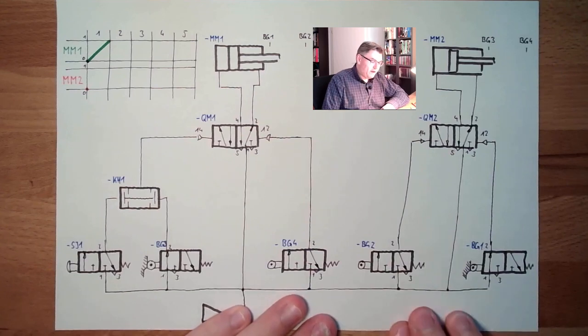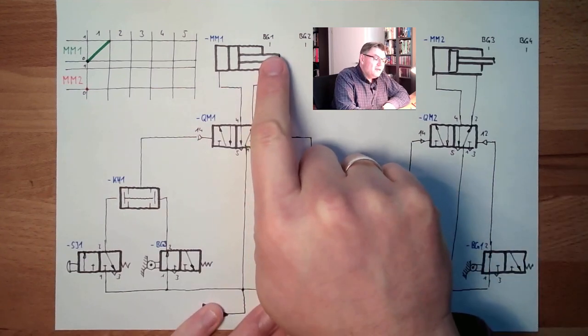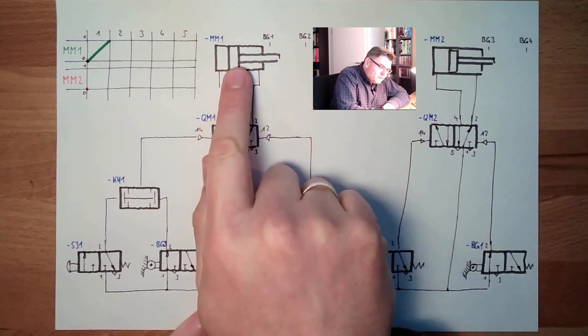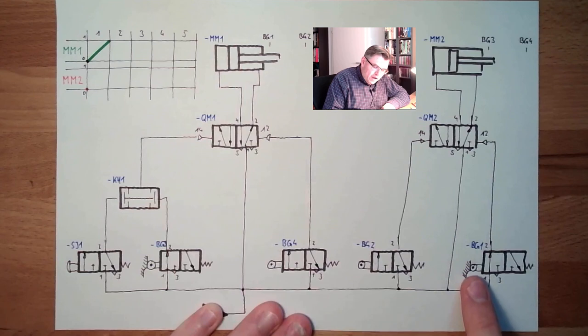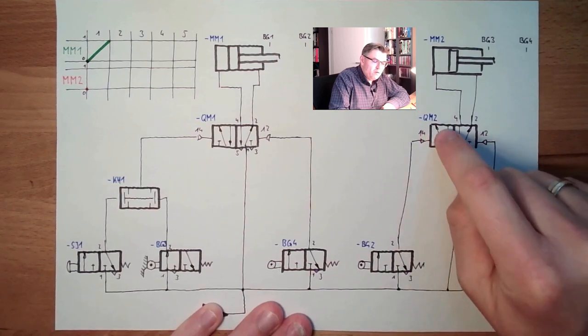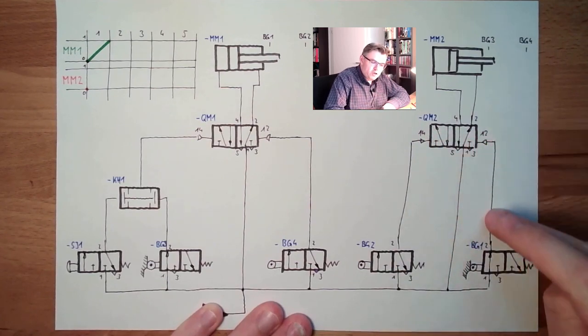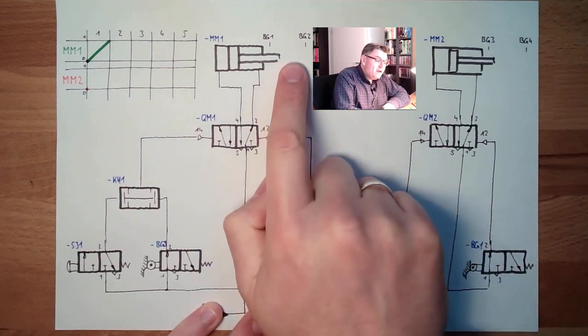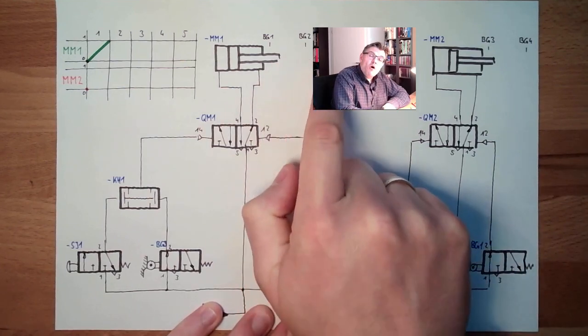What happens then? PG1 is no longer operated, that's the first thing. If we start to travel, at one point in time PG1 will not be operated. This means the 1-2 pressure side at QM2 is pressureless, because this is relieved here.